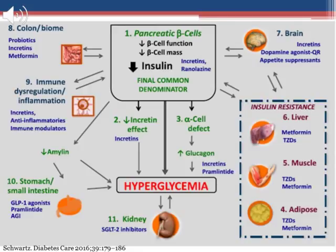The next image shows where all the medications for type 2 diabetes work. For insulin resistance in the liver, muscle, and adipose tissue, metformin and TZDs target these organs. For the brain, incretins, dopamine agonists, or appetite suppressants target that organ. SGLT2 inhibitors target the kidneys. GLP-1 agonists and pramlintide target the stomach and small intestines. For immune dysregulation or inflammation, incretins and anti-inflammatories are options. For the colon, probiotics, incretins, and metformin are used. And for the pancreatic beta cells, incretins are also utilized.